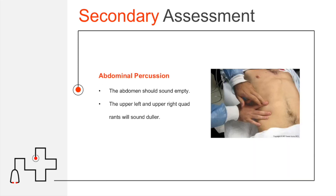Abdominal percussion is a secondary assessment technique often overlooked pre-hospitally and even in the emergency department, except by the most skilled physicians who still perform thorough hands-on assessments. The abdomen should sound different in different areas — the upper left and right quadrants will sound duller than the rest. Percussion involves placing your fingers on different areas of the abdomen and tapping on your fingernail, listening for dullness or hyper-resonance, as hollow organs and solid organs produce different sounds.